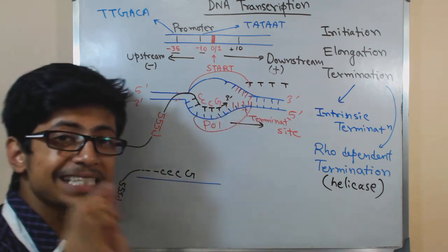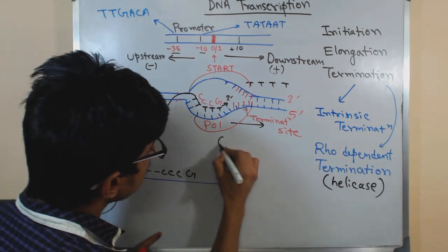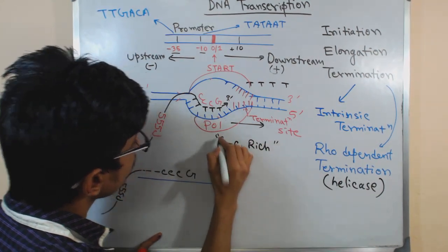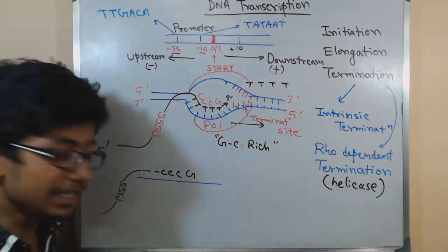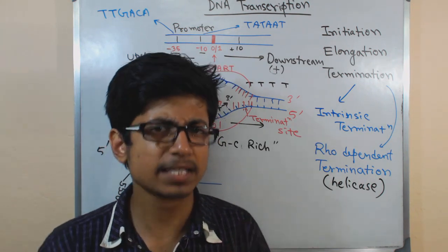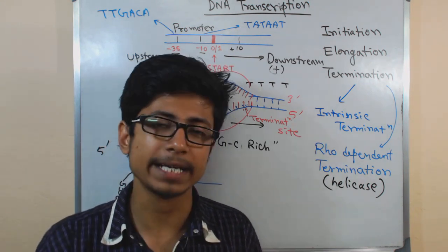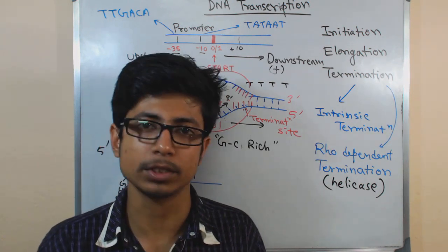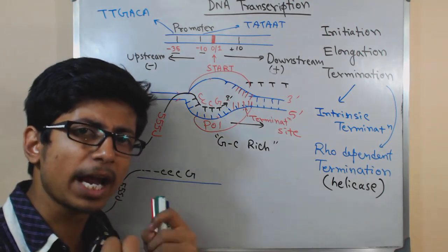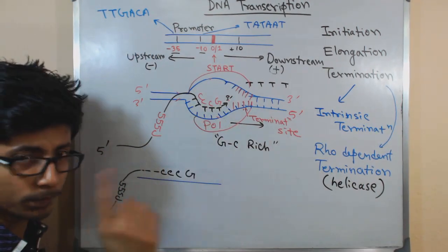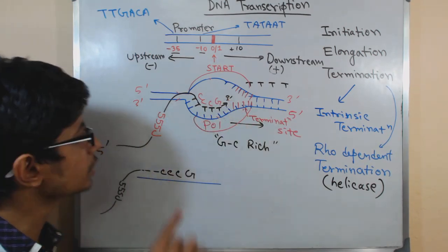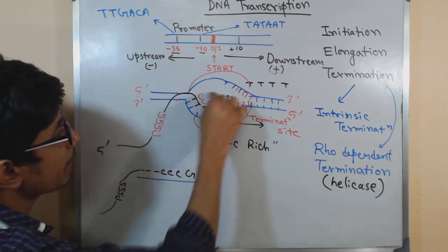Once the RNA has this type of GC-rich sequence, remember that G and C are paired with each other by three hydrogen bonds — massive bonding power. On the other hand, adenine pairs with uracil by only two hydrogen bonds — less power. The GC-rich sequence forms a palindrome: GGGC on one side and CCCG on the other, creating a complementary structure between distant parts of the RNA strand.